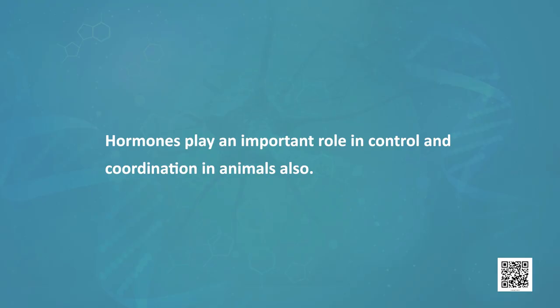A question arises: why do we need to inhibit growth? As you know, fruits get ripened and should detach from the plant, so growth inhibition is required after a proper system. All these hormones help in control and coordination in plants. Hormones also play an important role in control and coordination in animals, so next we will discuss the animal hormones or the endocrine system.